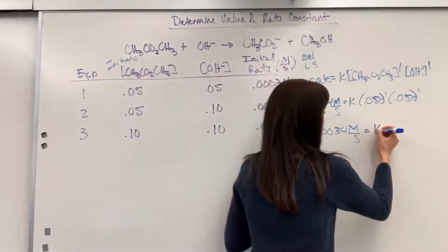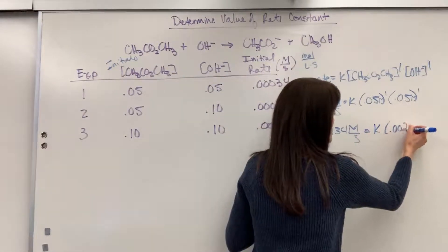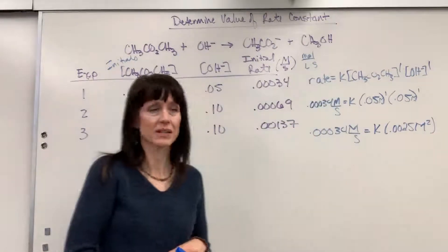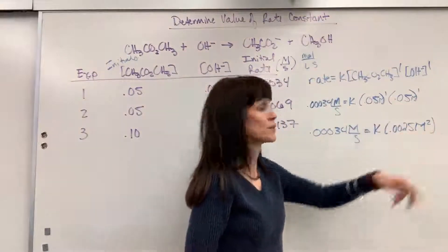So I multiply those, we're going to get K times 0.0025 molarity squared. Molarity times molarity will give me molarity squared.